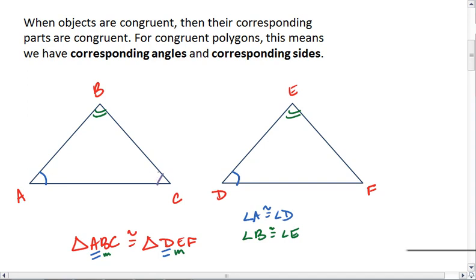Finally, we have angle C and angle F. So angle C is congruent to angle F because they are corresponding angles. So this is our list of corresponding angles.